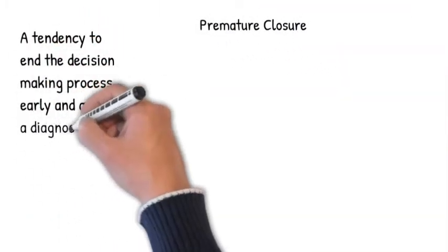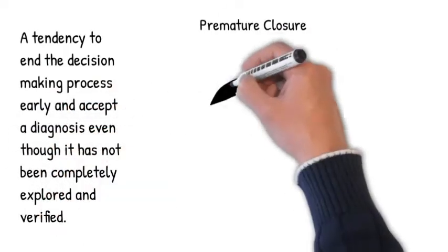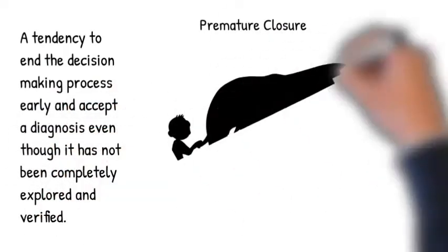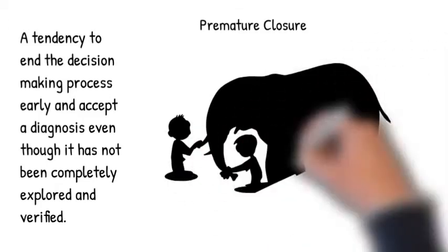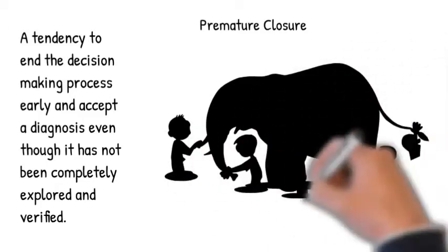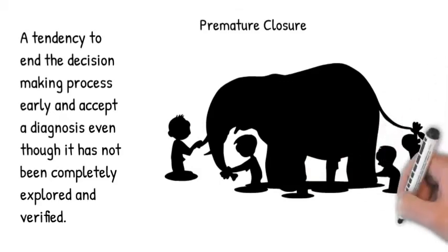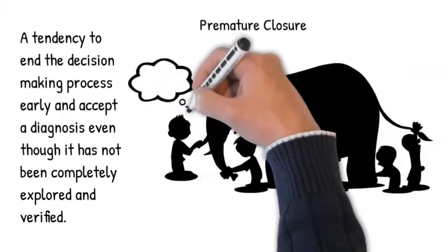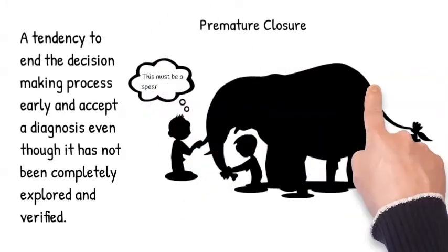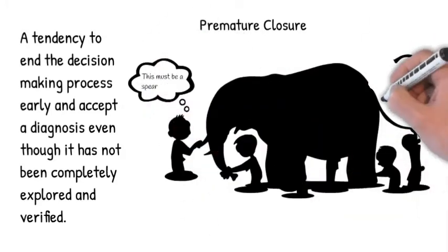Premature closure accounts for a large proportion of misdiagnosis. There is a tendency to end the decision-making process early and accept a diagnosis even though it has not been completely explored and verified, potentially resulting in ineffective care. This is similar to the parable of the blind villagers who only encounter a portion of the elephant and come to a conclusion about what they are experiencing that does not take into account the entirety of the situation.